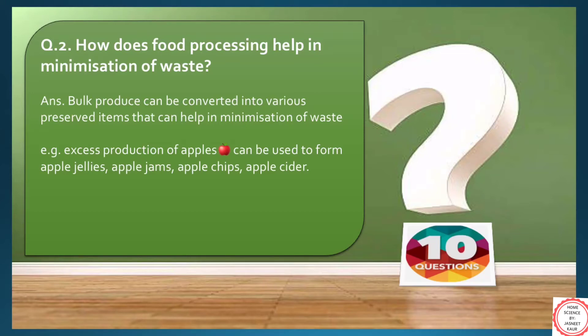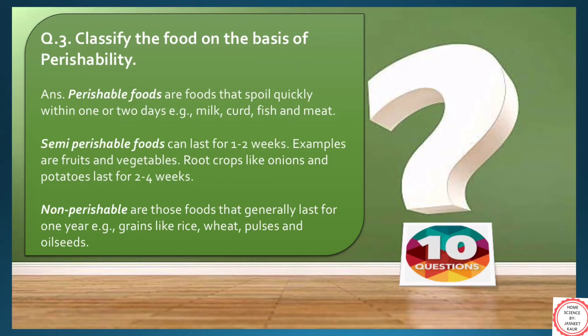Moving on to question number 3: classification of foods on the basis of perishability. Perishability means things which are subject to decay or spoil. We divide this into three categories: perishable foods, semi-perishable foods and non-perishable foods.